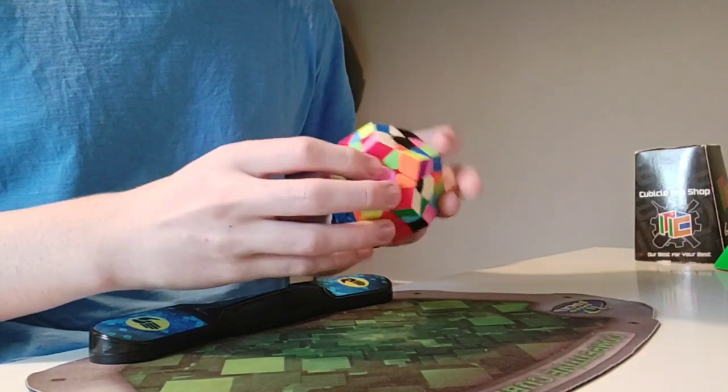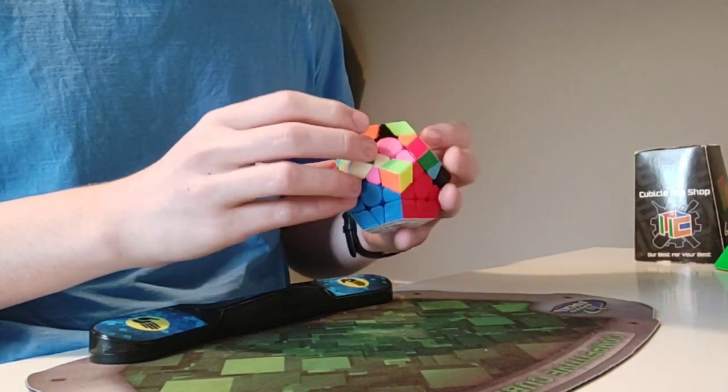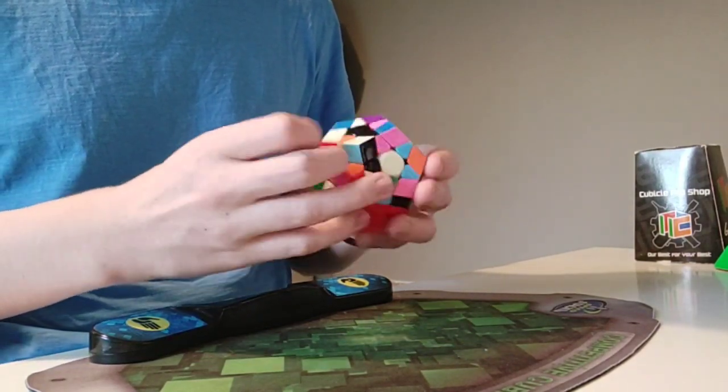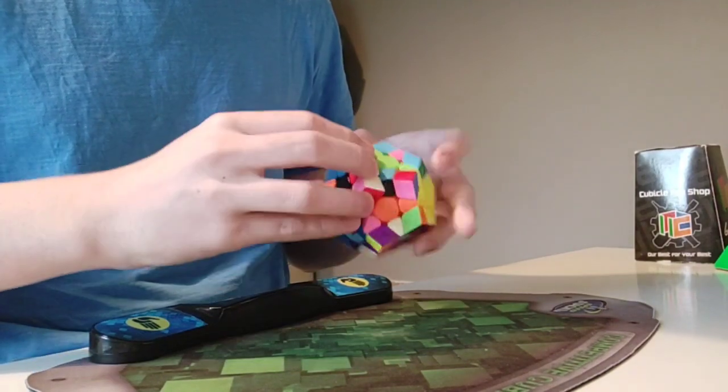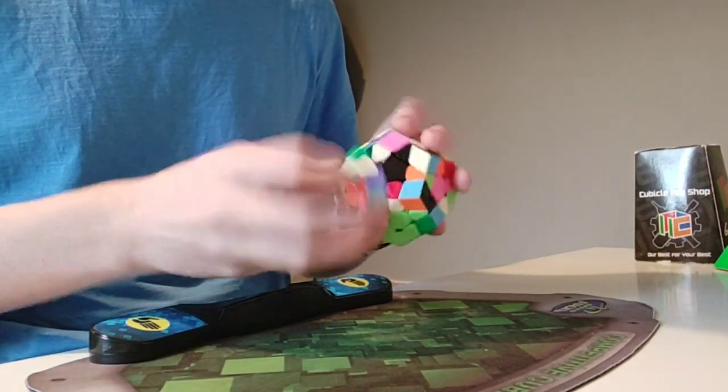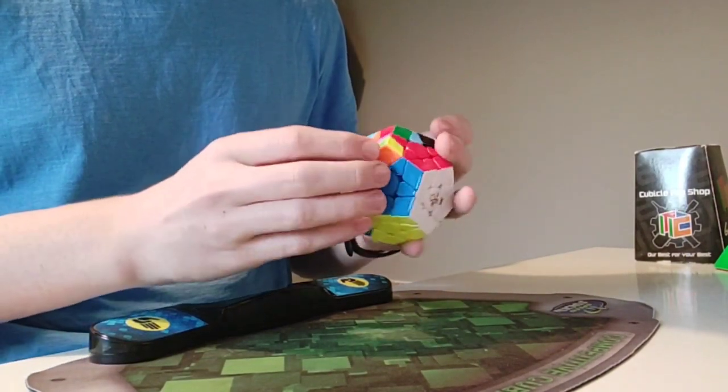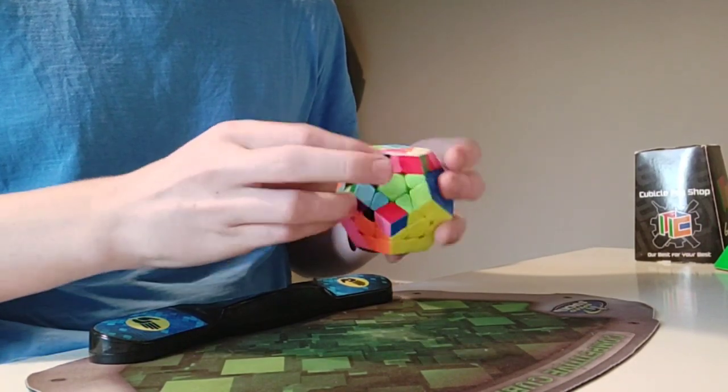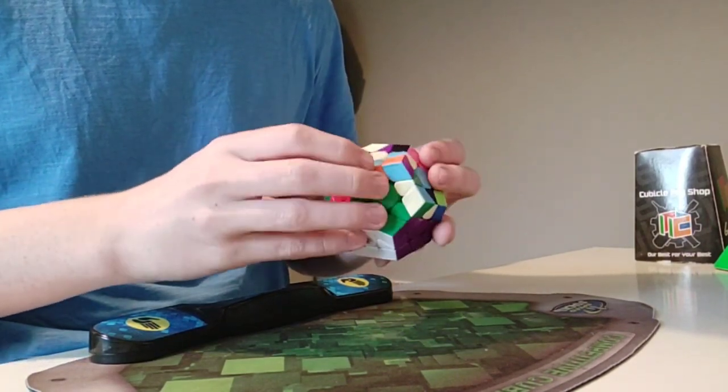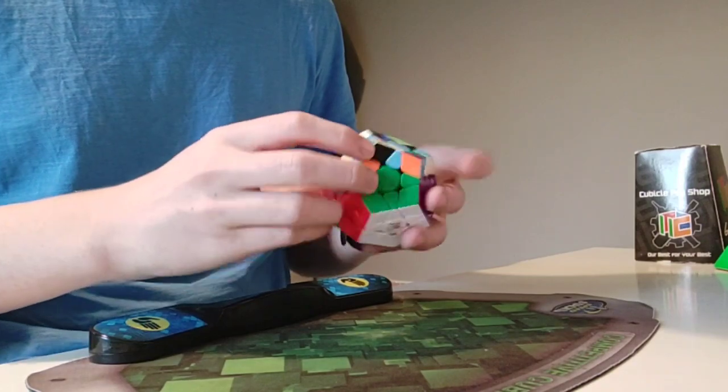This is great, but it comes with some downsides. Firstly, a lot of the fast lubes like DNM37 are very fast but also give the cube a nice smooth feeling, which is less noticeable with Stardust—you don't get that same effect.